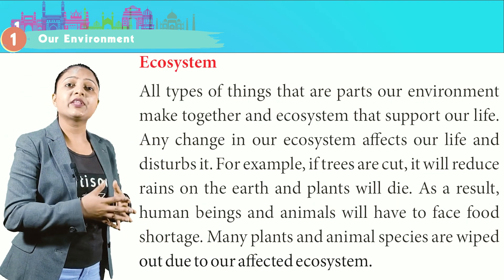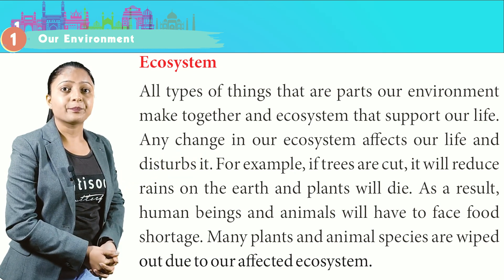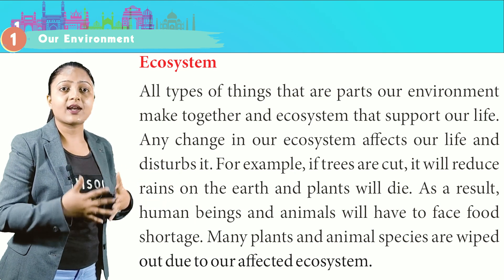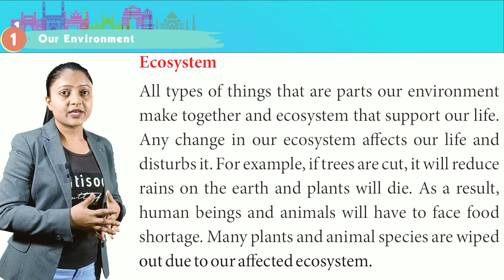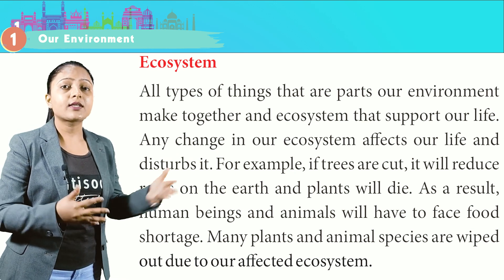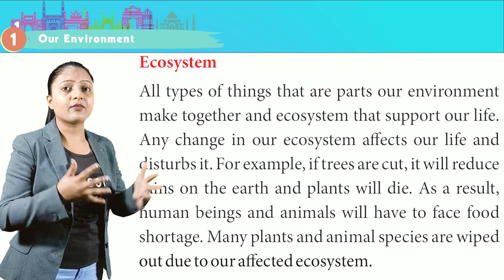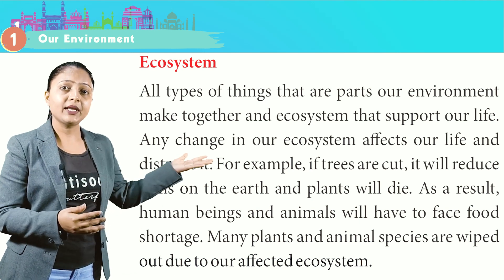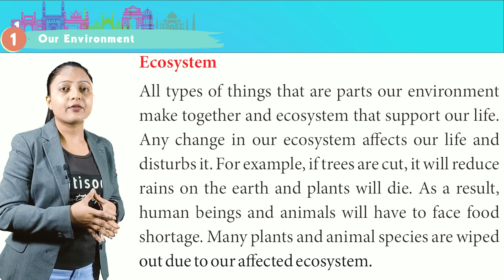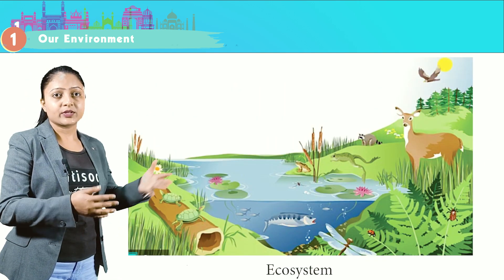Ecosystem. All types of things that are part of our environment together make an ecosystem that supports our life. Any change in our ecosystem affects and disturbs our life. For example, if trees are cut, it will reduce rains and plants will die. As a result, human beings and animals will face food shortage. Many plant and animal species are wiped out due to our affected ecosystem.